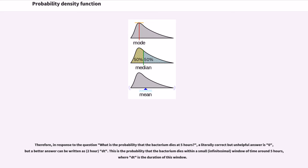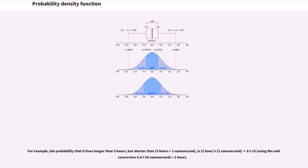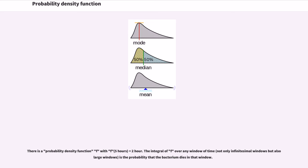Therefore, in response to the question 'what is the probability that the bacterium dies at 5 hours?', a literally correct but unhelpful answer is 0, but a better answer can be written as f·dt — the probability that the bacterium dies within a small window of time around 5 hours, where dt is the duration of this window. There is a probability density function f with f equals 2 per hour. The integral of f over any window of time is the probability that the bacterium dies in that window.